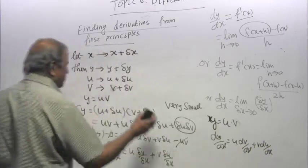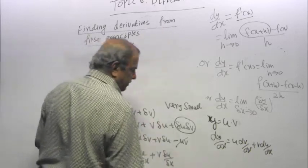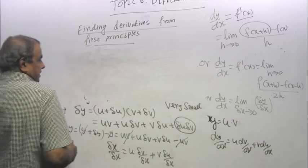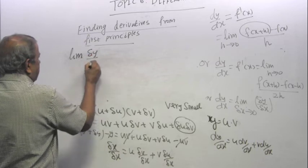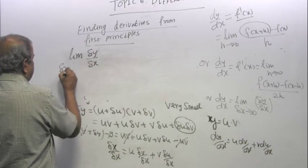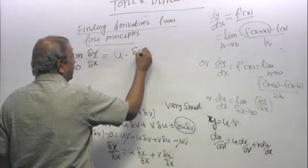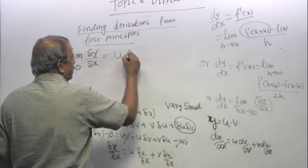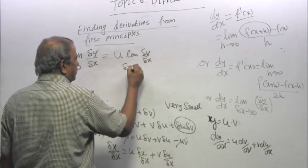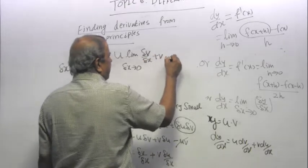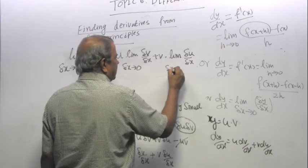So that is what I have come to, which of course I will leave it to you to figure out using f of x plus h and f of x. So what is limit delta y by delta x as delta x tends to 0? Will be u has no change there, so limit delta v by delta x as delta x tends to 0 plus v times limit delta u by delta x as delta x tends to 0.